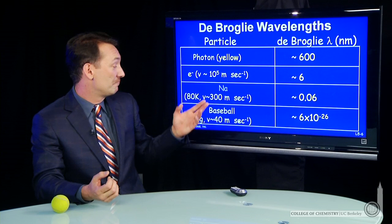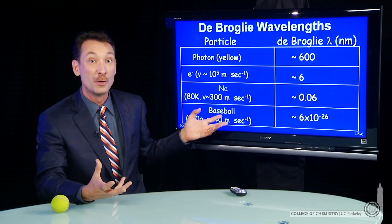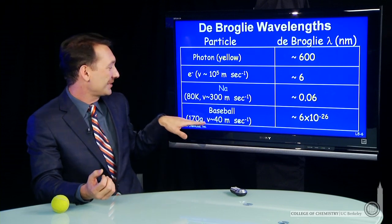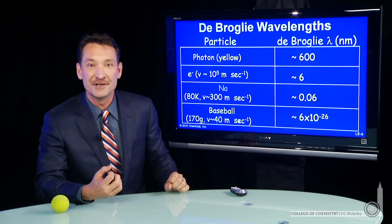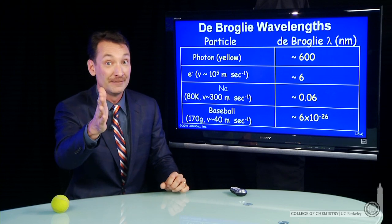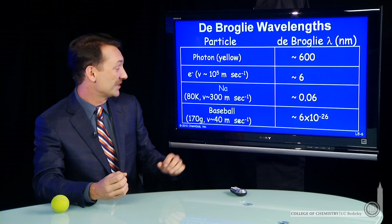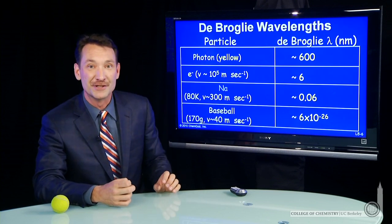Now let's take a baseball, an object that we know the size and mass of, a macroscopic object. A baseball, 170 grams, set by the Major League Baseball Association. A standard baseball thrown at 40 meters per second. That's a very good fastball.